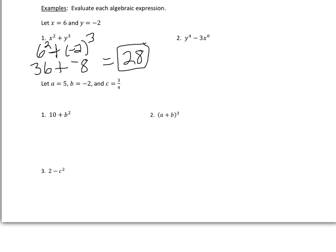For y to the fourth minus 3 times x to the zero power, substituting gives negative 2 to the fourth power minus 3 times 6 to the zero power. Negative 2 to the fourth power — a negative raised to an even power gives a positive — so 2 to the fourth is 16. Anything to the zero power is 1. Next, we must do multiplication before subtraction: 3 times 1 is 3. So we have 16 minus 3, which equals 13.